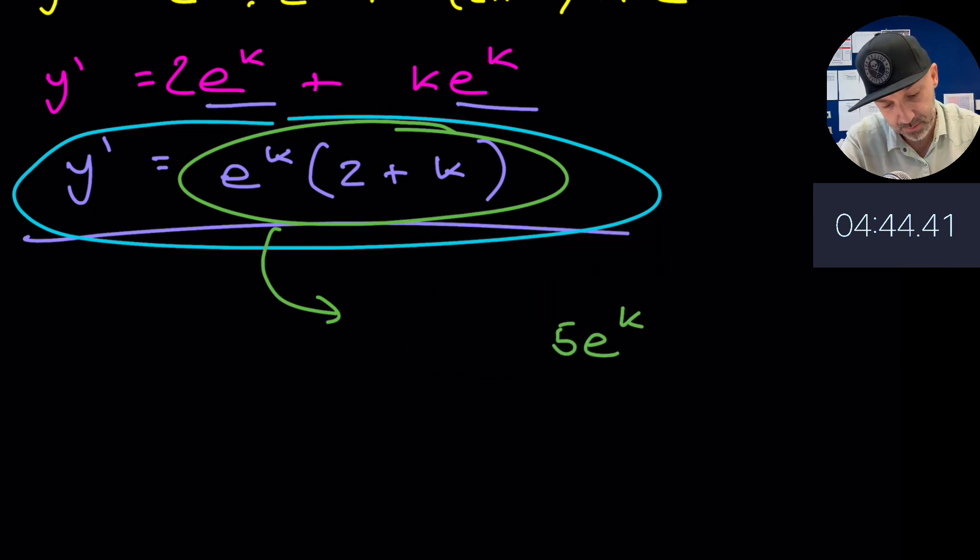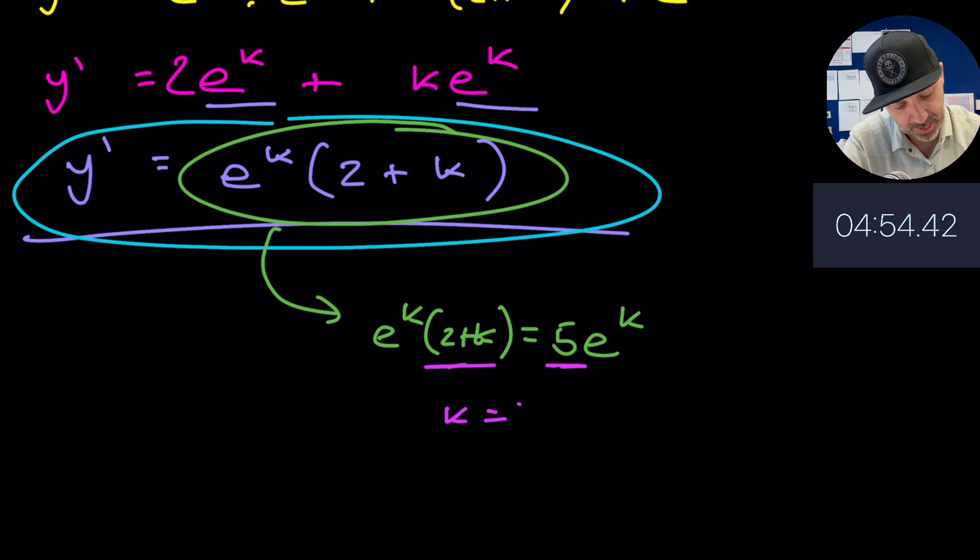Then e to the k times (2 + k) has to equal this, and we can through comparison see that k has to equal 3.